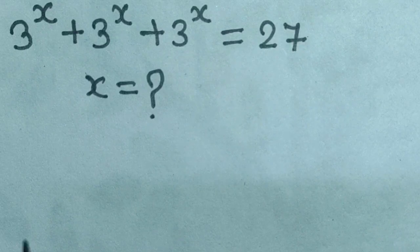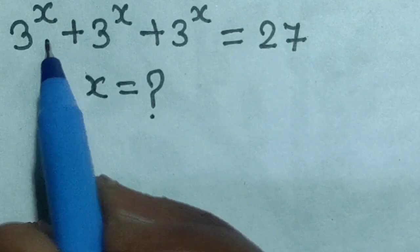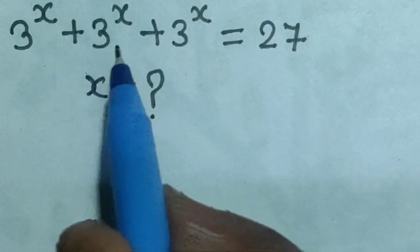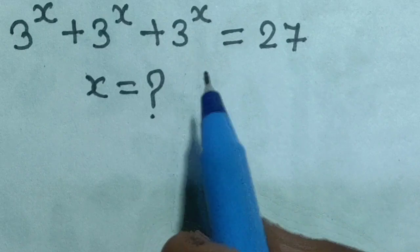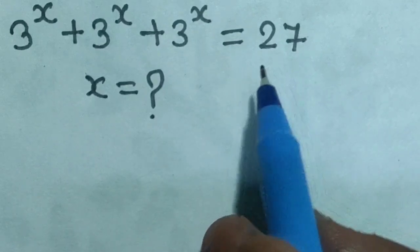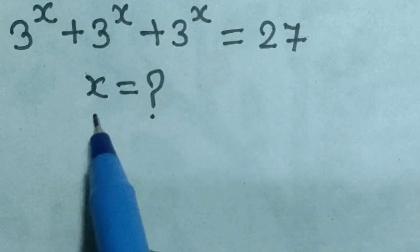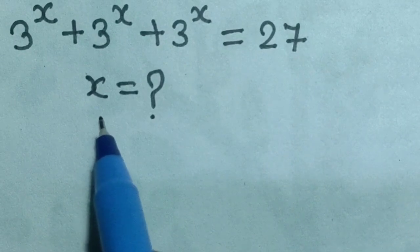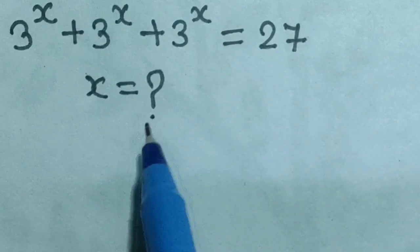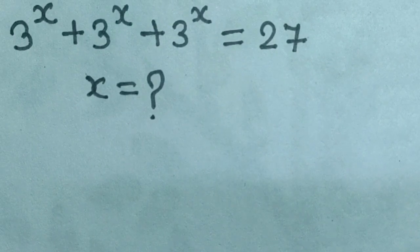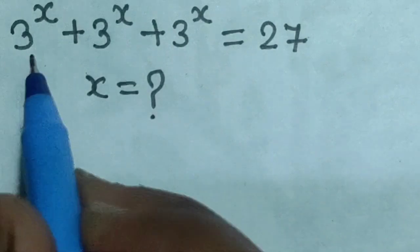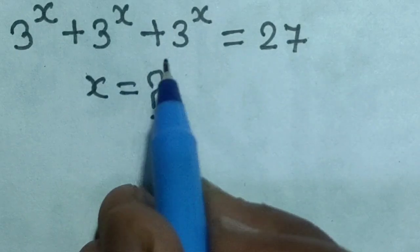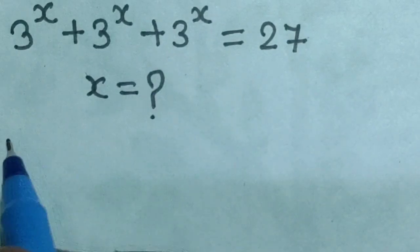Hello everyone. Here we have given 3 power x plus 3 power x plus 3 power x equal to 27, and we have to find x. So let's solve this.